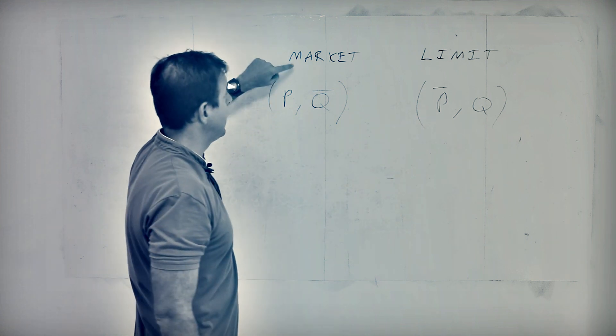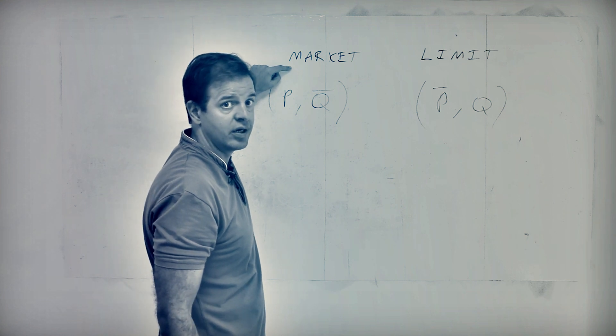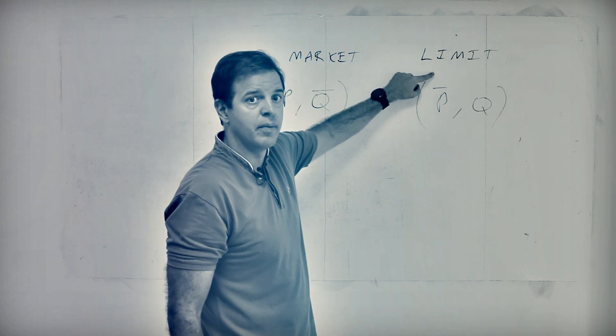In this case, a market order, you're acting as a liquidity taker. In the limit order, you're acting as a liquidity maker.